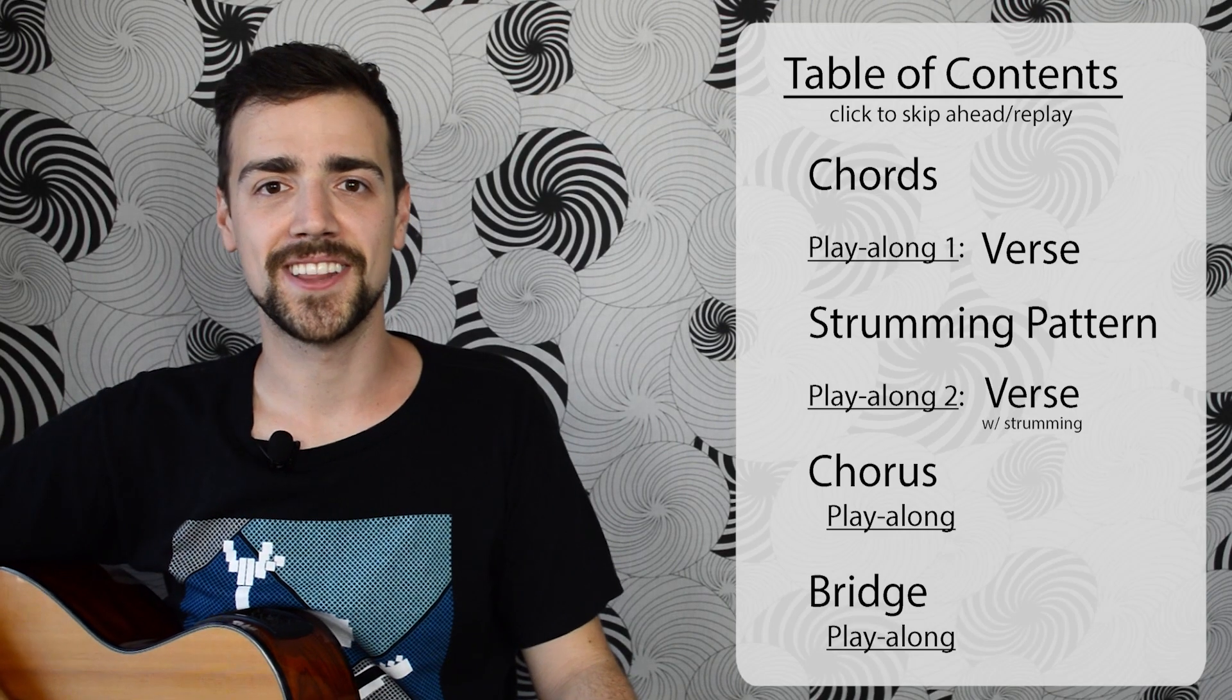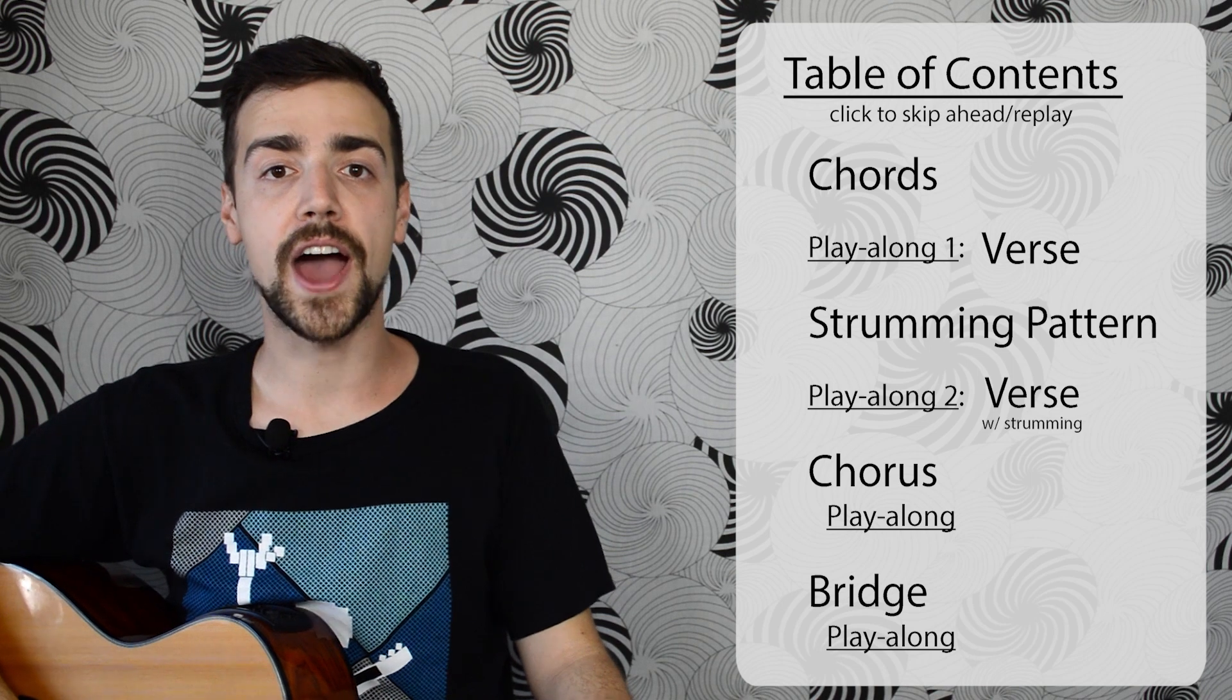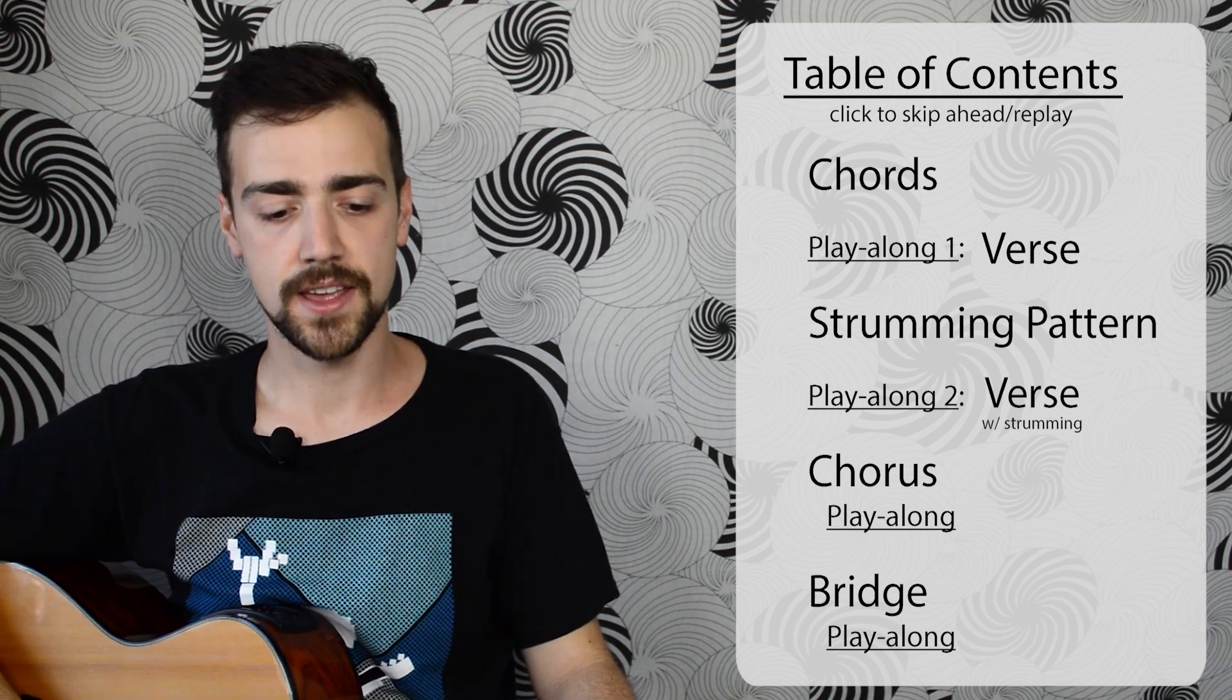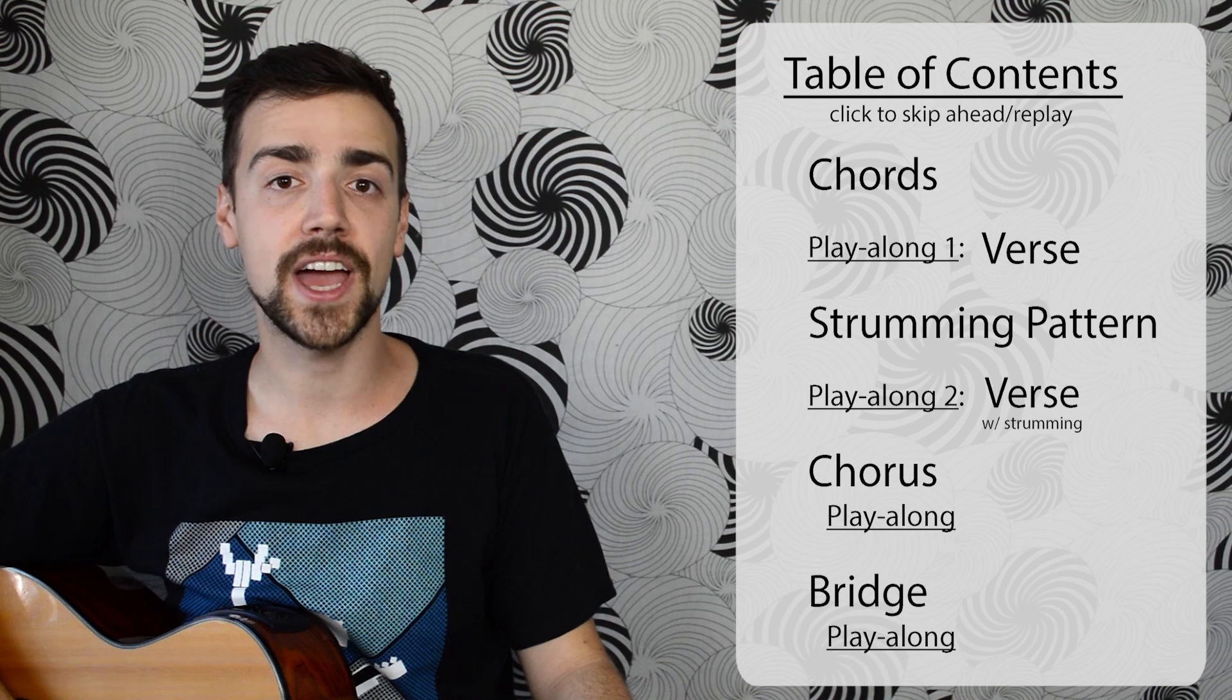Hi. Welcome to 5 Minute Guitar Lessons. In today's lesson, we're going to learn Ironic by Alanis Morissette, and that is on the 1995 album Jagged Little Pill.